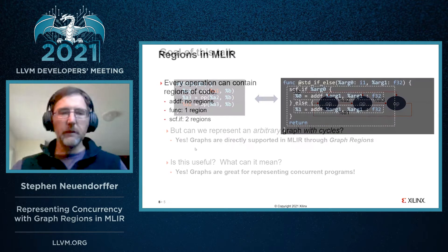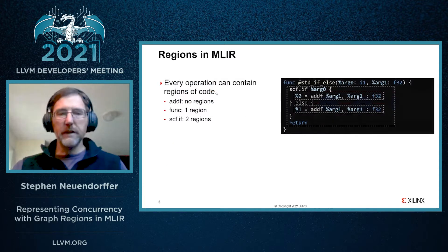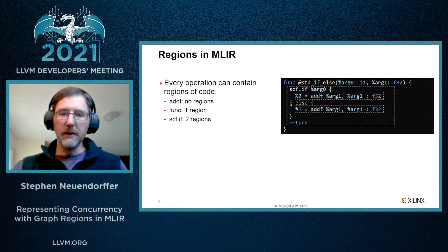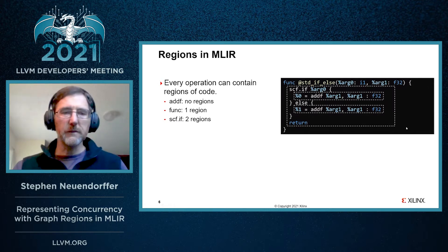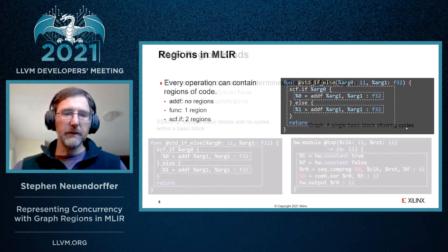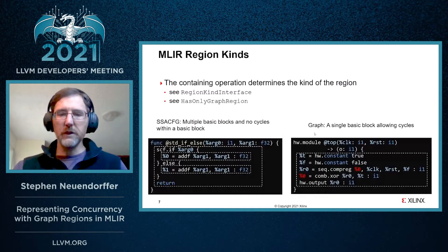Let's talk a little bit about regions. In MLIR, every operation can contain a region of code. The addf operation is a very simple operation that doesn't have a region associated with it. The scf.if operation does have two regions — one containing one add and another containing the other add. The function definition is also an operation in MLIR and has a region that contains all of the code inside the function. In MLIR, there are actually two different kinds of regions: an ssacfg region, like what you're probably familiar with, and a graph region, which allows us to represent graphs.